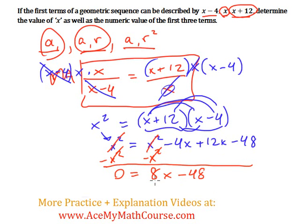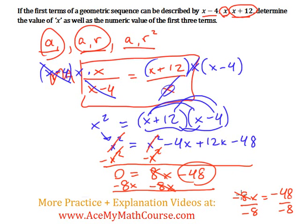Then I can just subtract 8x from both sides. We end up with negative 8x is equal to negative 48. Then we can just divide both sides by negative 8. So x is going to be equal to positive 6 because negative 48 divided by negative 8 is positive 6. Negative negative, they make a positive.